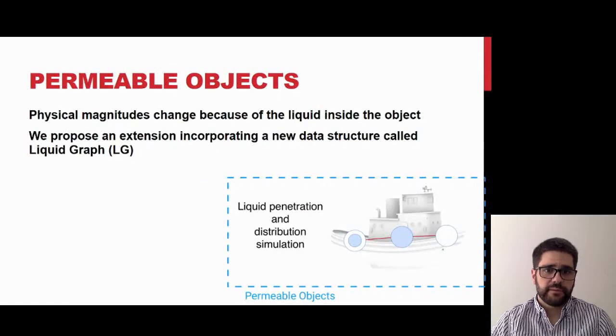In the case of permeable objects, the physical magnitudes change over time because of the liquid inside the object. For these cases, we propose to incorporate a new data structure called liquid graph. This structure stores the liquid amount and the distribution inside the model.